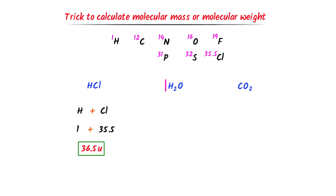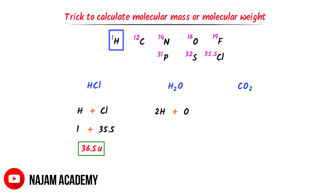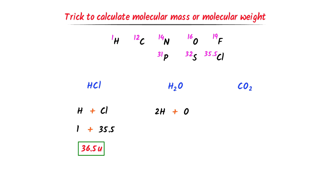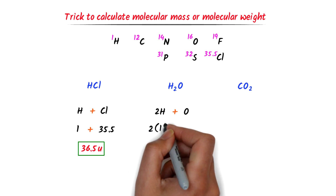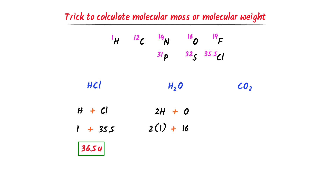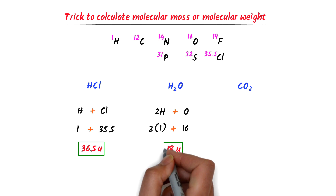In case of H2O, we can see that there are two atoms of hydrogen and one atom of oxygen. Now I add their respective atomic masses. The atomic mass of hydrogen is 1 unit and the atomic mass of oxygen is 16 units. So I write 2×1 + 16, which equals 18 units. So the molecular mass of H2O is 18 units.